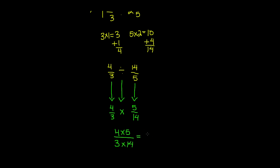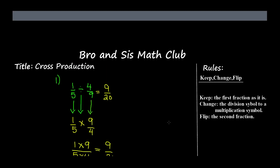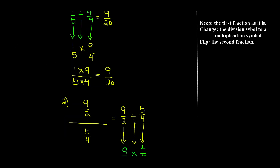Now we simply multiply: four times five over three times fourteen. Four times five is twenty, and three times fourteen is forty-two, so we get twenty over forty-two. Go ahead and look up more videos and visit our website at broancesmacklove.com. We'll see you guys next time — bye!